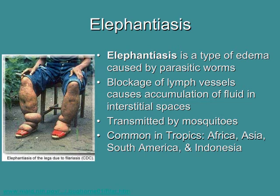Now let's talk about some interesting lymphatic disorders. The first is elephantiasis — a type of edema caused by parasitic worms. These worms block lymphatic vessels and cause accumulation of fluid in the interstitial spaces, called edema or lymphedema. The parasitic worms are transmitted by mosquitoes. Fortunately it's not something to worry about in Hawaii, but it is common in the tropics such as Africa, Asia, and South America. The big picture is that elephantiasis is caused by accumulation of interstitial or lymphatic fluid because lymphatic vessels are blocked by parasitic worms.